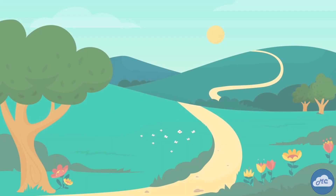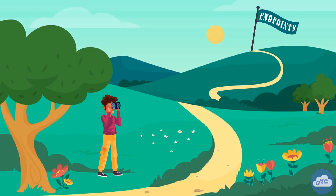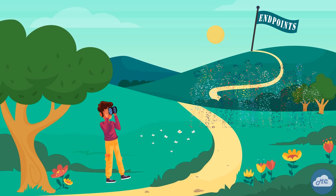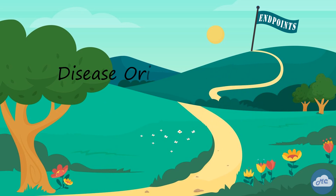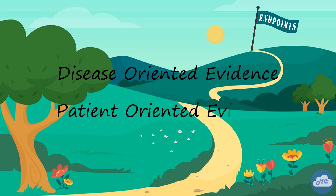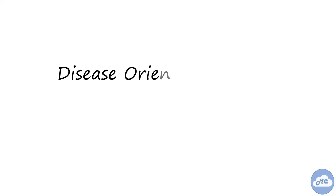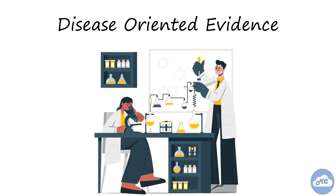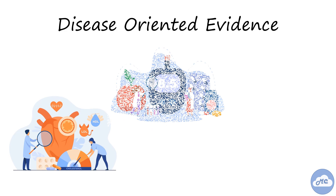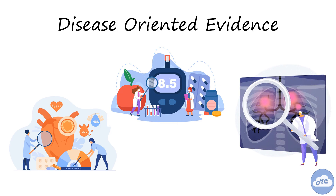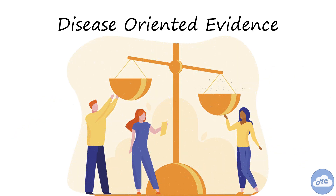A vital consideration when evaluating the endpoints of a clinical trial is the importance of the endpoint to the patients. Endpoints can be classified as disease-oriented or patient-oriented. Disease-oriented evidence is non-clinical evidence that addresses factors that do not have a direct impact on patients. Examples include cholesterol levels, hemoglobin A1C levels, or imaging findings. These outcomes are not as important to patients as clinical outcomes.